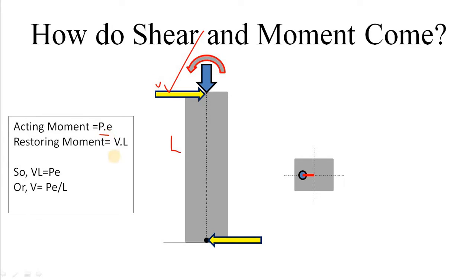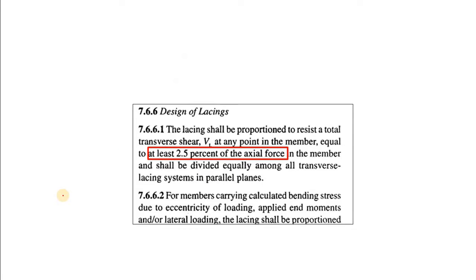Then from equilibrium, P×e is equal to V×L, or shear force acting on the column is P×e/L. Here you can see e is very small compared to L. That's why a very nominal fraction of axial force is considered as shear force in columns.